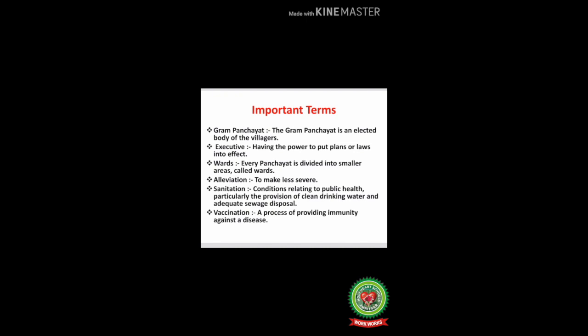Before starting the reading of the lesson, I would like to discuss the important terms related to today's topics. Number one: gram panchayat — the gram panchayat is an elected body of the villagers. Number two: executive — having the power to put plans or laws into effect. Number three: wards — every panchayat is divided into smaller areas called wards. Number four: alleviation — to make less severe. Number five: sanitation — conditions relating to public health, particularly the provision of clean drinking water and adequate sewage disposal. Number six: vaccination — a process of providing immunity against a disease.